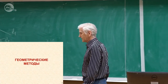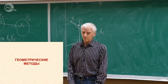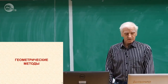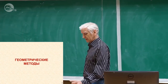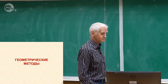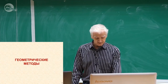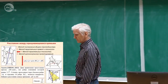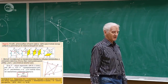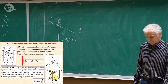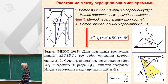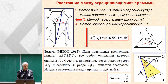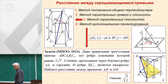При геометрических методах используются теоремы и определения стереометрии, без координат и векторов. Среди геометрических методов выделяем следующие: первый метод — построение общего перпендикуляра, иногда сложно реализуемый; второй — метод параллельной прямой и плоскости; третий — метод параллельных плоскостей. Новым является метод ортогонального проектирования: берём одну из прямых и через какую-нибудь точку проводим плоскость, перпендикулярную данной прямой.